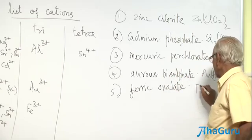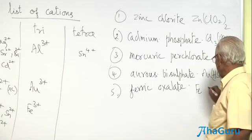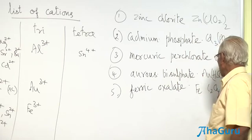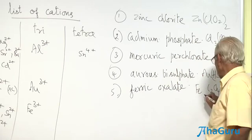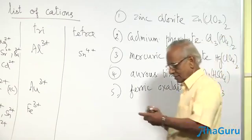Ferric, valency 3. Oxalate, C2O4, valency 2. Interchange Fe2(C2O4)3.